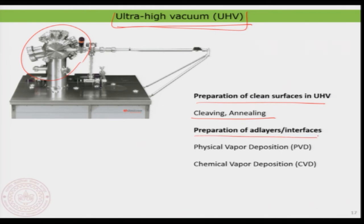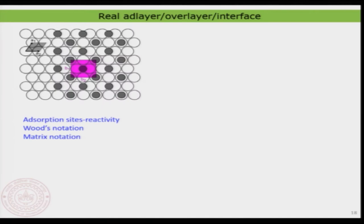We also learned how to prepare adlayers or interfaces. Two main methods were covered: physical vapor deposition and chemical vapor deposition. Chemical vapor deposition is suited for preparing larger-scale or bulkier samples. Physical vapor deposition is more expensive as it is typically done in an ultra-high vacuum or high vacuum chamber, but it is important for generating materials with low impurity and high precision. We then looked at the microscopic structure of adlayers, overlayers, or interfaces — they are all the same thing referred to by different names.